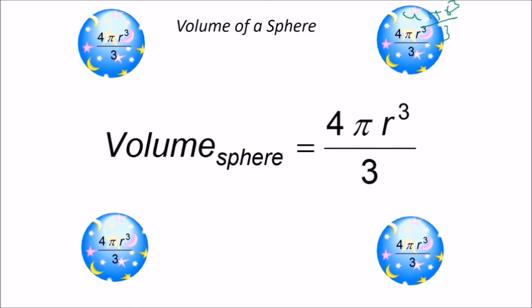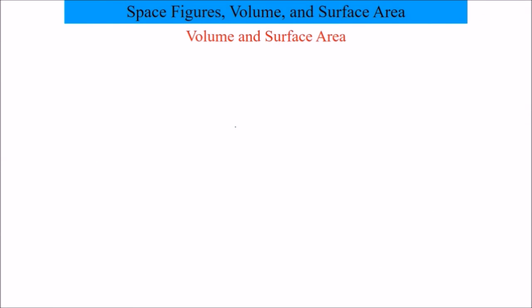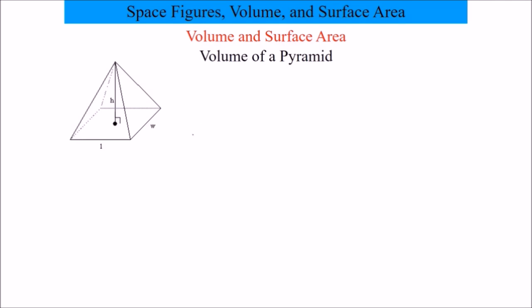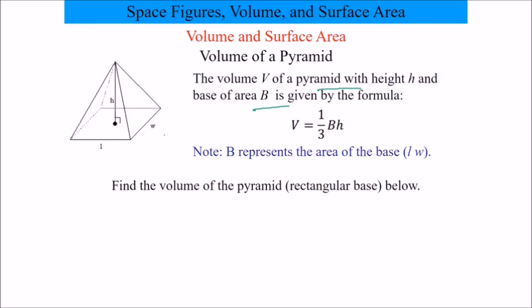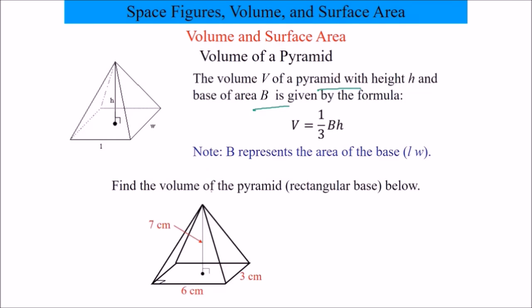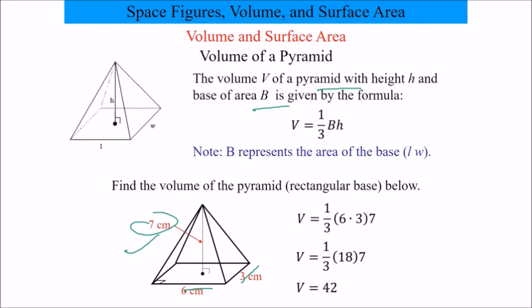The volume of the sphere is (4/3) π r³. We also compute the volume of a pyramid: with height h and base area B = l × w, the formula is (1/3) × B × h. For example: (1/3) × 3 × 6 × 7 = (1/3) × 18 × 7 = 42 cm³.